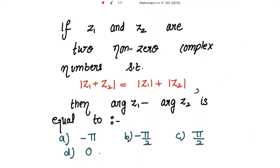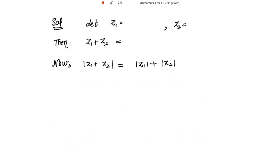z₁ and z₂ are two non-zero complex numbers such that mod of z₁ plus z₂ is equal to mod of z₁ plus mod of z₂. Then argument of z₁ minus argument of z₂ is equal to negative 5π/2, π/2, or 0? Let z₁ equal to x₁ plus iota y₁ and z₂ equal to x₂ plus iota y₂, and their sum is x₁ plus x₂ plus iota times y₁ plus y₂.